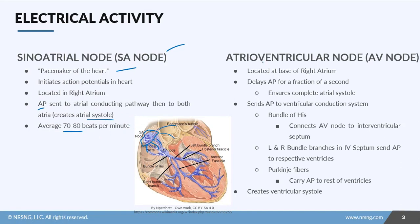The atrioventricular node is located at the base, and there's going to be a slight delay of the action potential for a fraction of a second. So what happens is: you get the action potential at the SA node, both atria contract, and then the action potential is sent down into the ventricular conduction system.